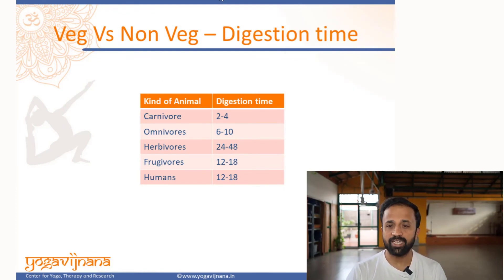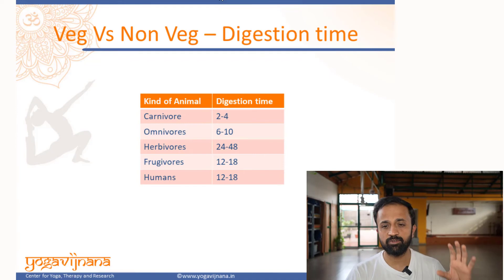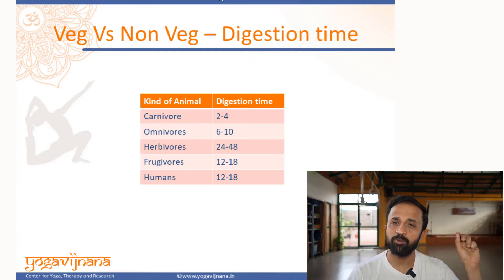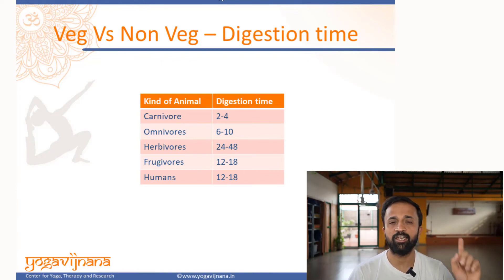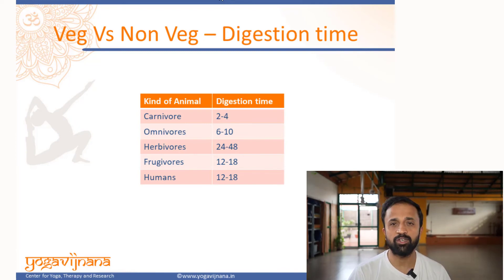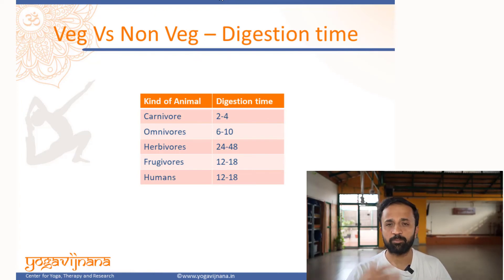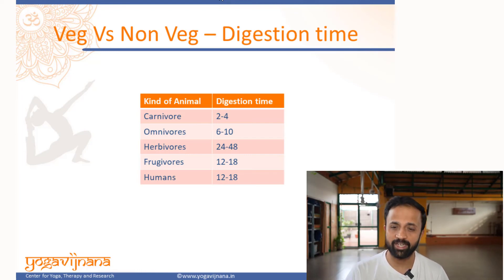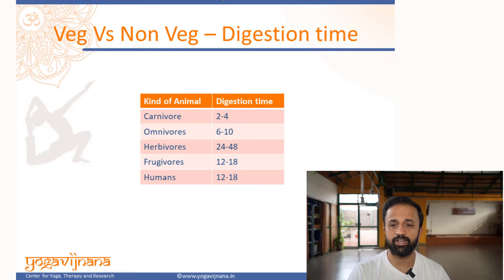Also, the time it takes for food to digest: in a carnivore, food can be digested in a very short amount of time because flesh cannot stay longer as it starts rotting sooner. But for a herbivore, it takes a really long time to digest — it goes through different stages because a lot of processing needs to happen for the food to be absorbed. Frugivores and humans have very similar digestive times.